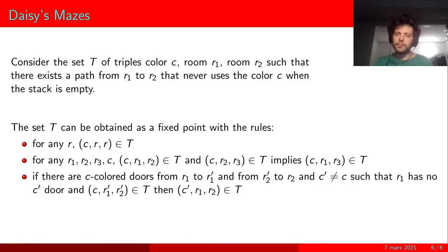The last rule is a bit more complicated, and you need to have understood deeply the problem to understand it. It says that you can use a c-color door, then a path that never discards the color c that you just added, and then you finally discard it.